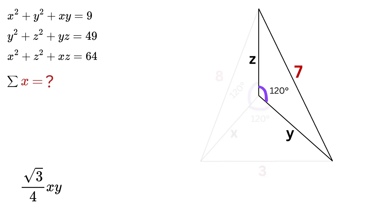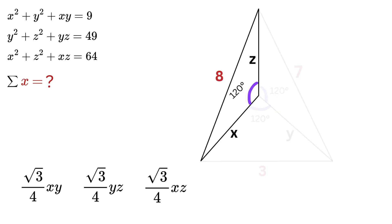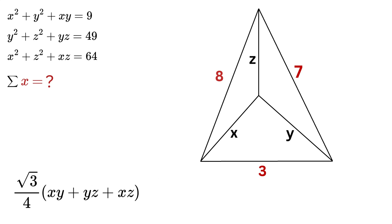Similarly, the area of this triangle will be (√3 yz)/4, and this will be (√3 xz)/4. So the total area of this big triangle will be equal to the sum of all these three areas, which is (√3/4)(xy + yz + xz). But we can also find the area of this big triangle using Heron's formula.